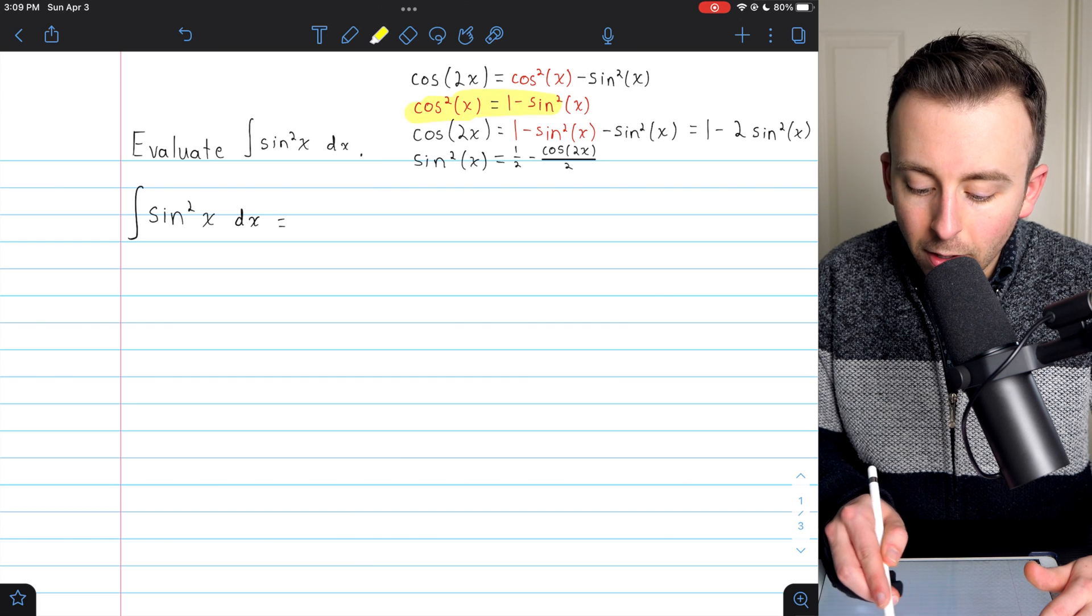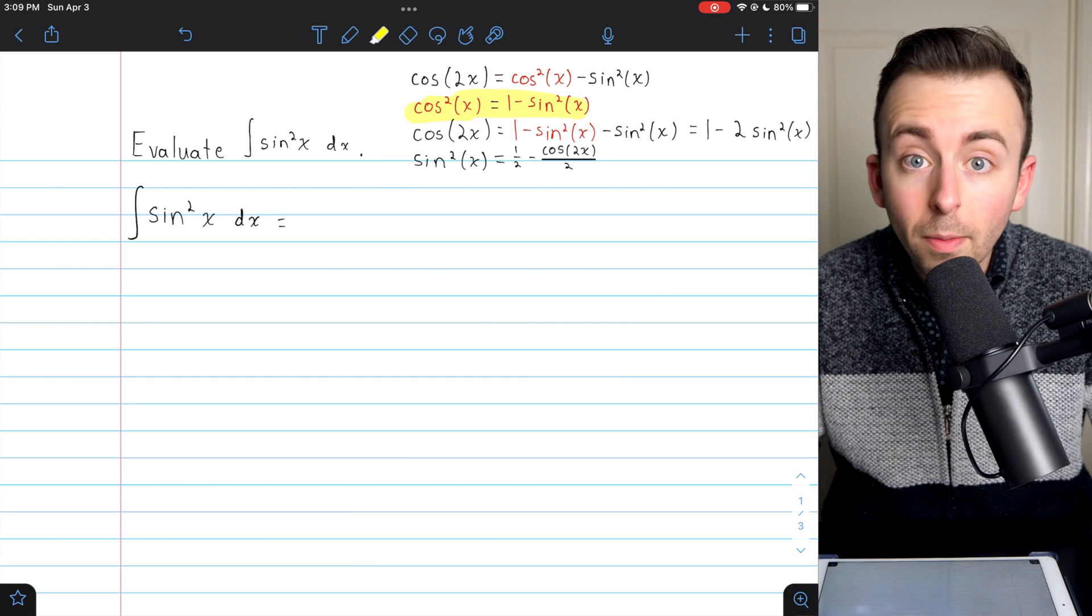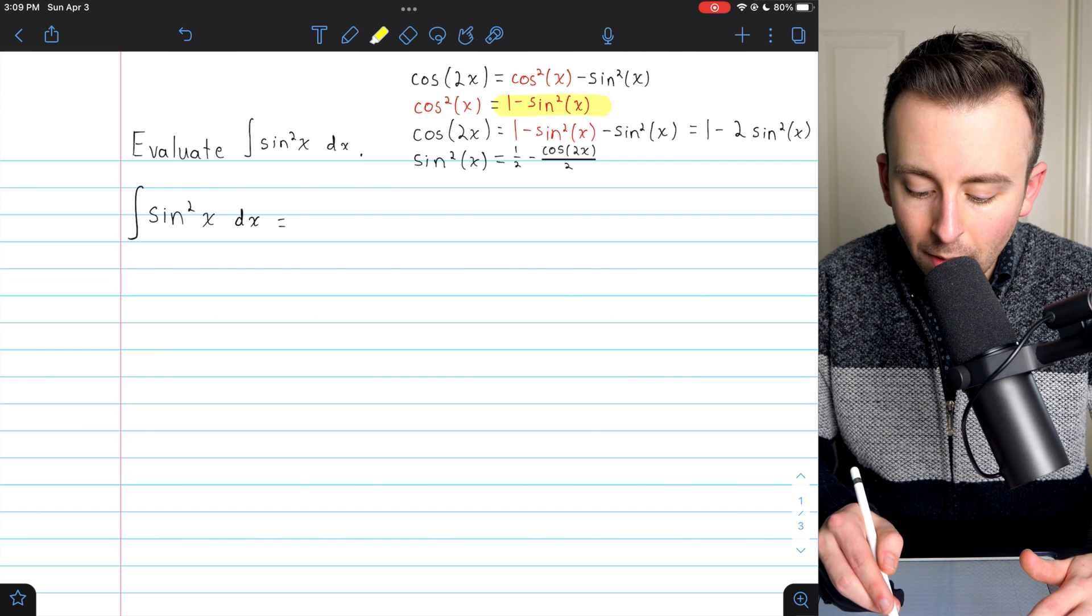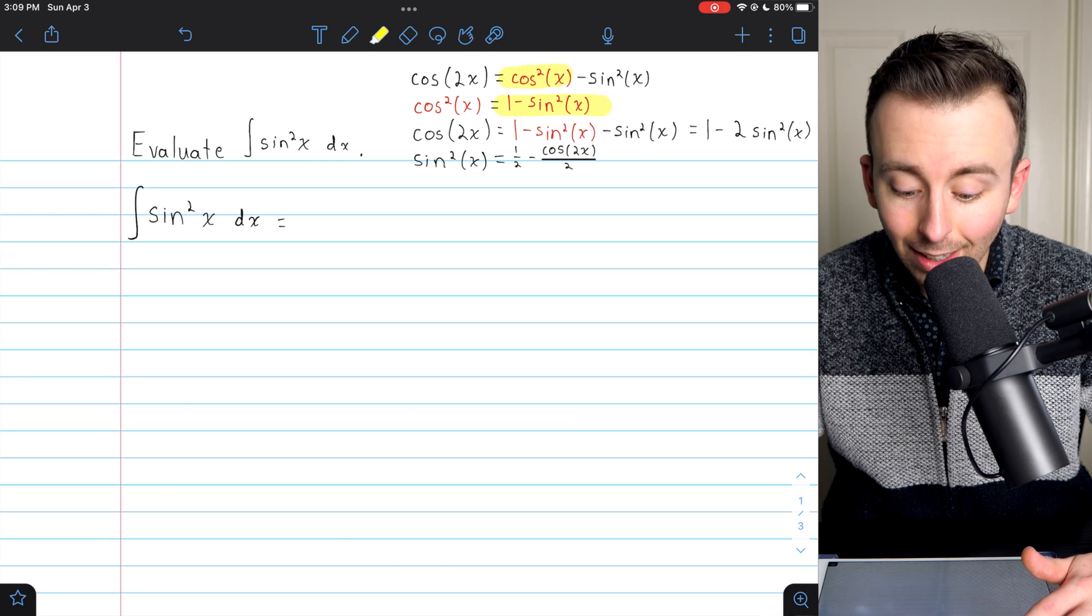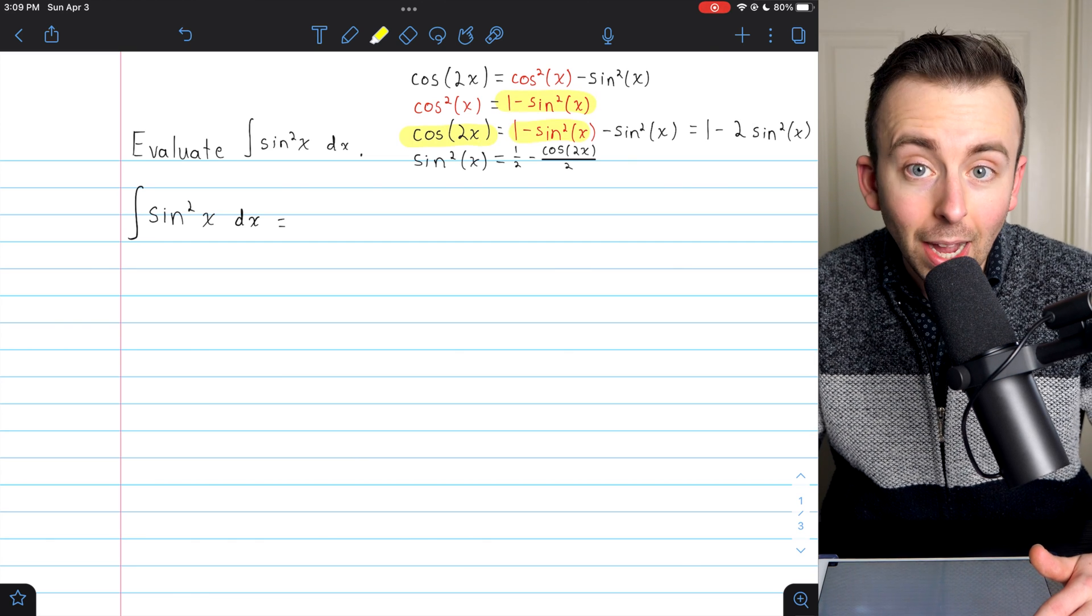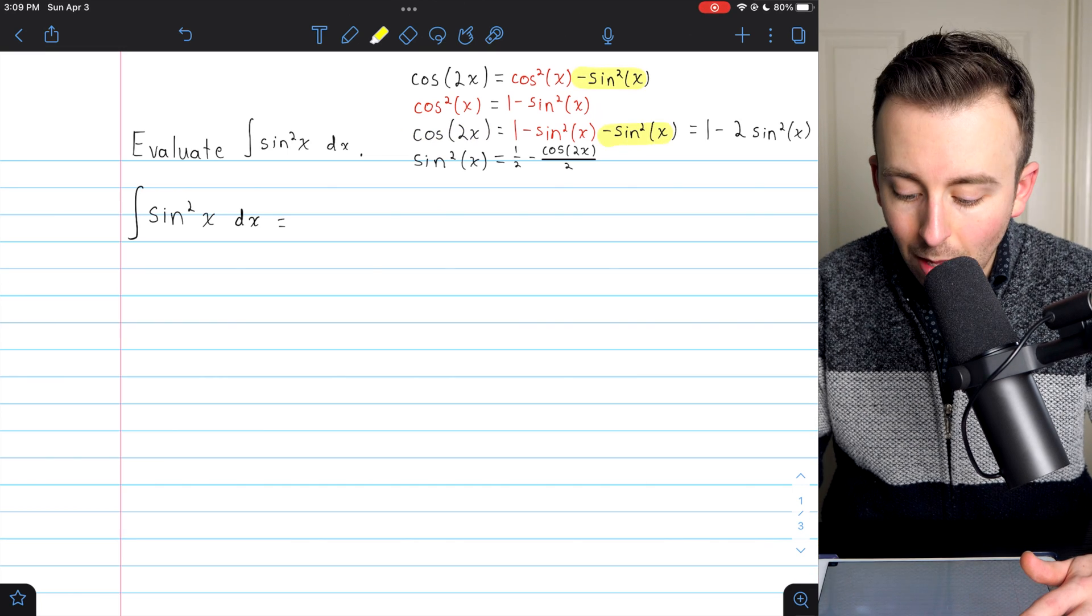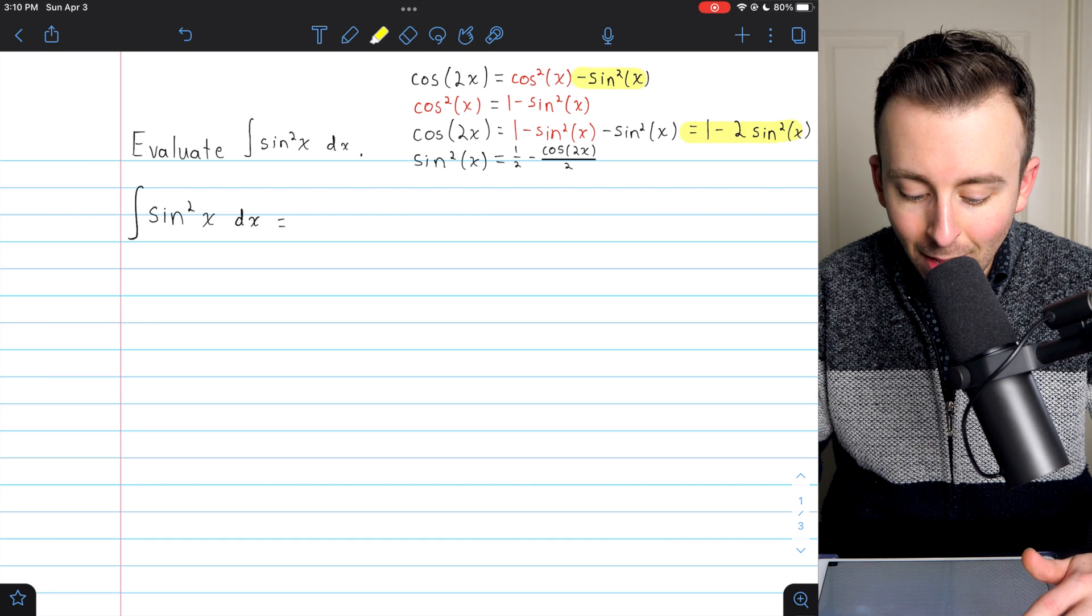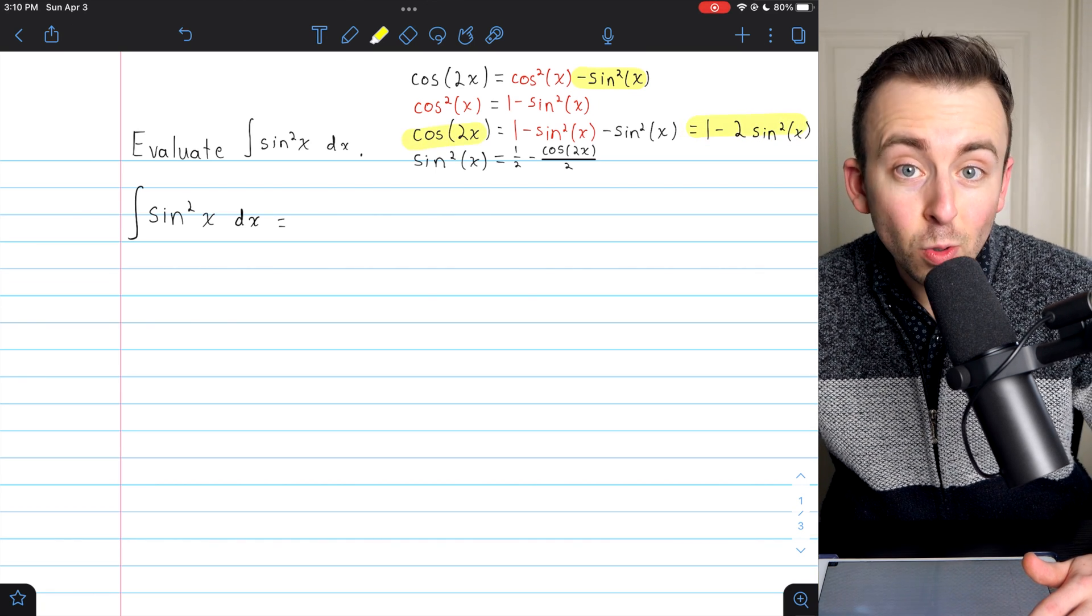Now, cosine squared by the Pythagorean identity is one minus sine squared. So we could substitute that back into the equation from the double angle identity. Then cosine of 2x would equal one minus sine squared minus sine squared, which is one minus two copies of sine squared. Then we've got cosine of 2x equals one minus two sine squared.